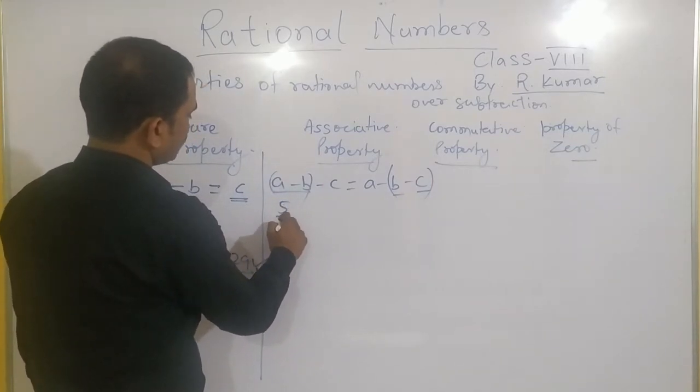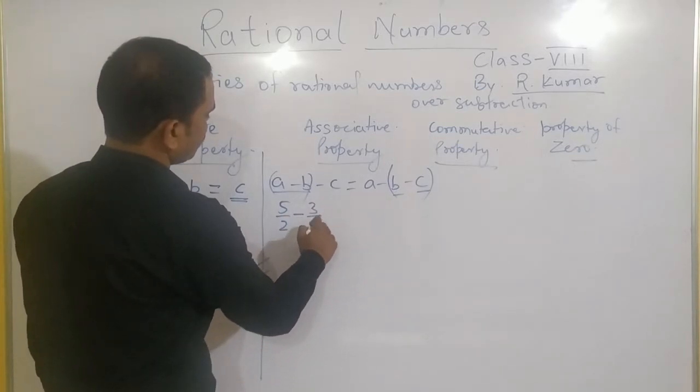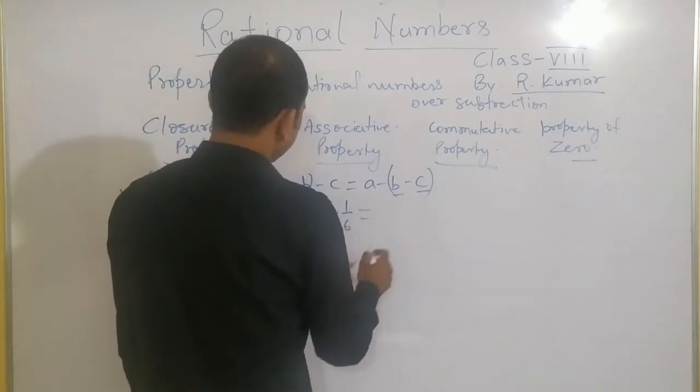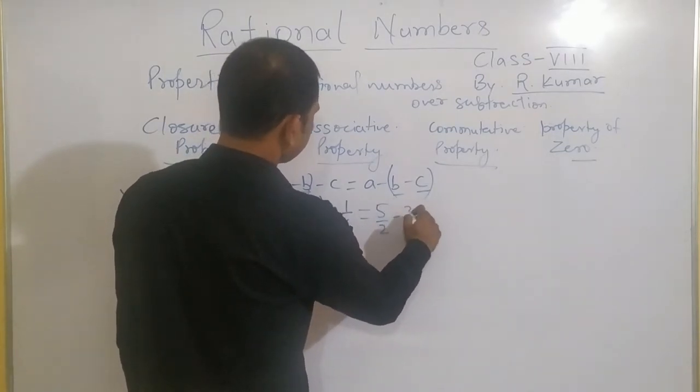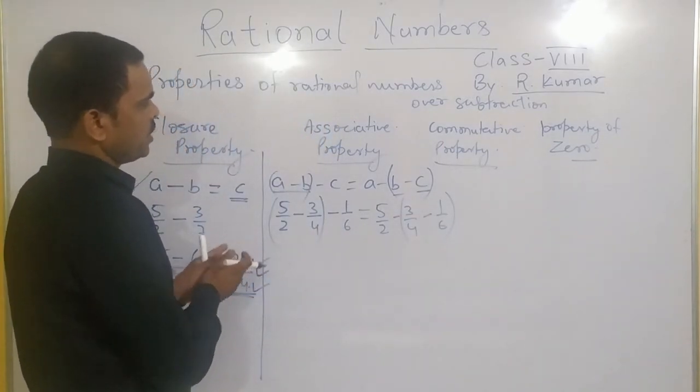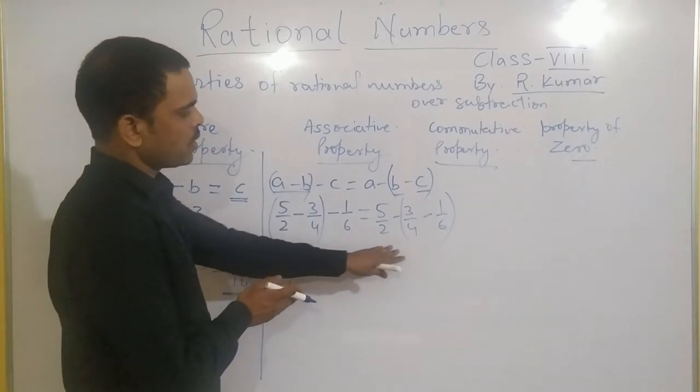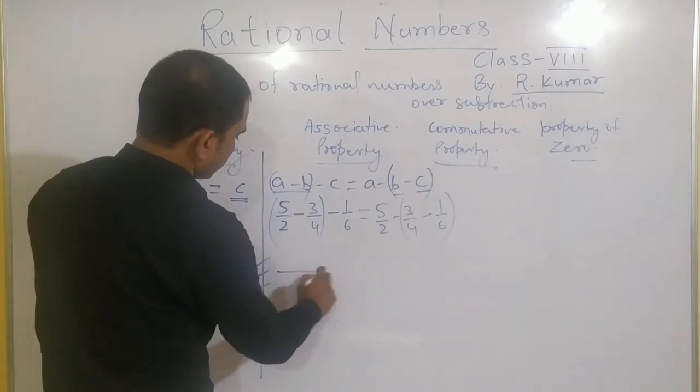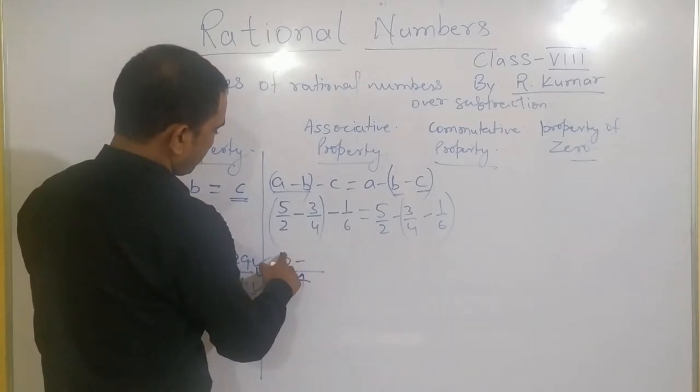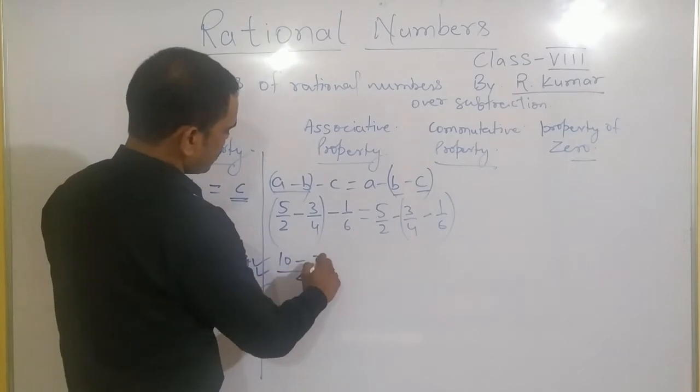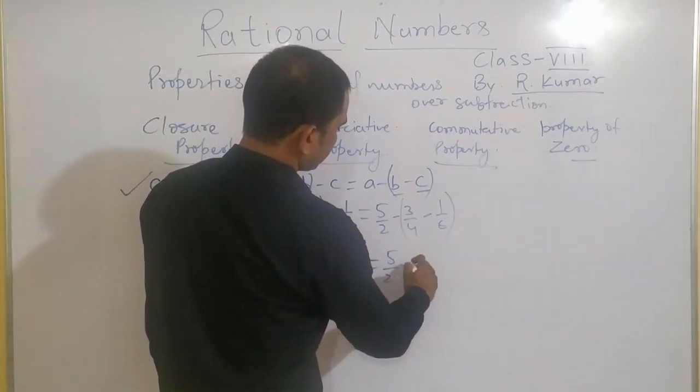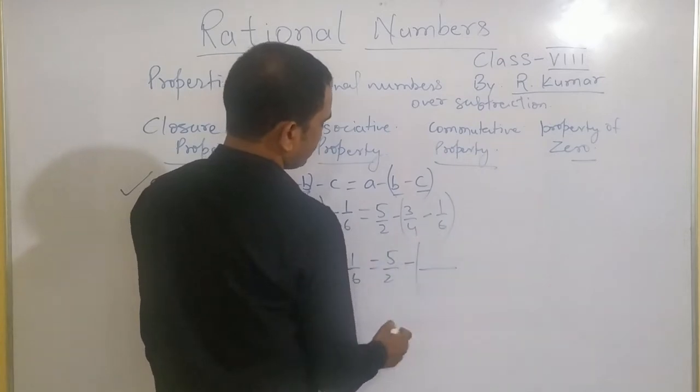5 by 2 minus 3 by 4 minus 1 by 6. The same I write this side also. But I will change the order minus 3 by 4 minus 1 by 6. Now, we will find the result for LHS and for RHS also. Inside the bracket, LCM will be 4. Now, 2 times 2 gives 4, 5 times 2 gives 10 minus 3 times 1 gives 3. It will remain same minus 1 by 6 equals to 5 by 2. Inside the bracket, LCM will be 12 there.